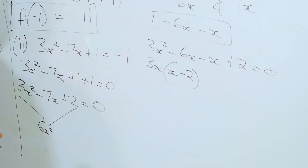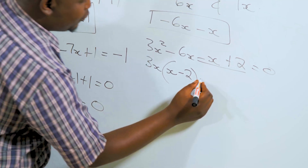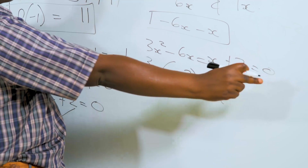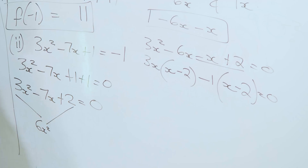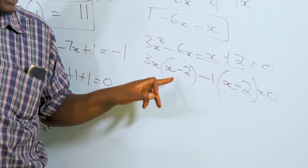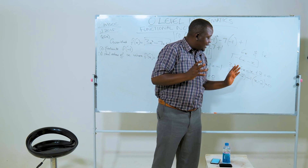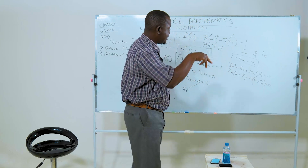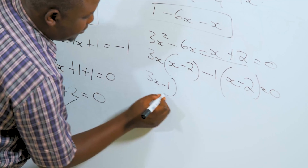Factoring out 3x from the first two terms gives x(3x - 2). Then factoring out negative 1 from the last two terms gives negative 1(x - 2). Whenever you are factorizing a quadratic expression, make sure you have a common bracket; if the two brackets are different, it means you have made a mistake. So we take the common factor bracket and write (3x - 1)(x - 2) equal to zero.